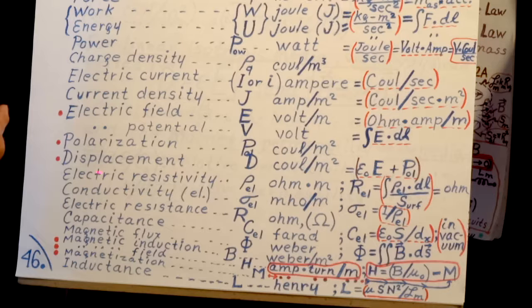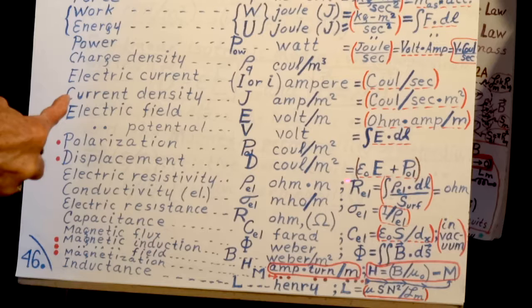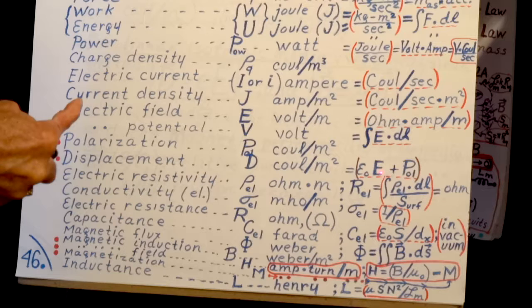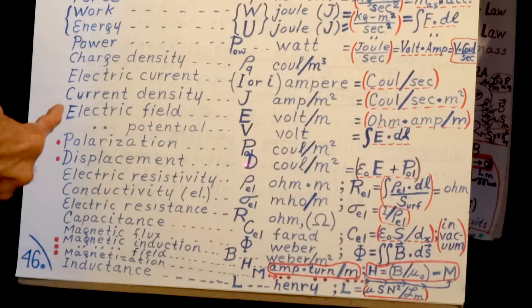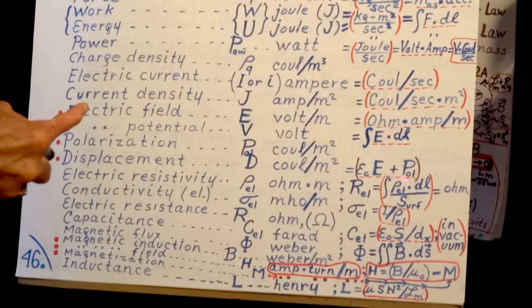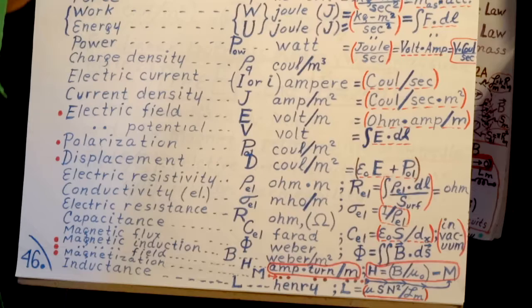Polarization, displacement, this is defined here as the electric constant multiplied by the electric field plus polarization. This is the definition of displacement. E here is electric field. Polarization is in coulomb per square meter, like number of coulomb you would have in a parallel plate capacitor.